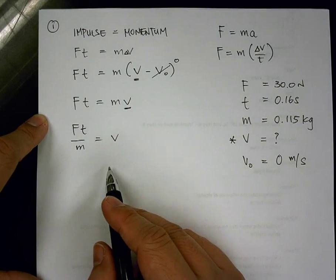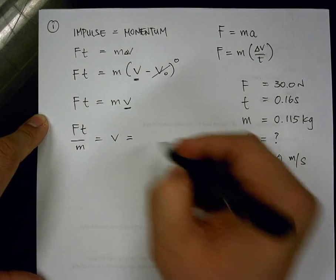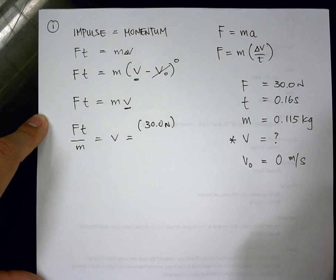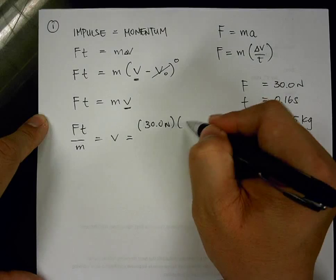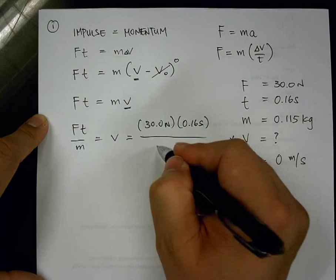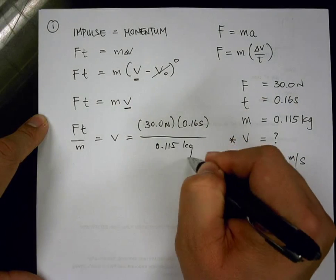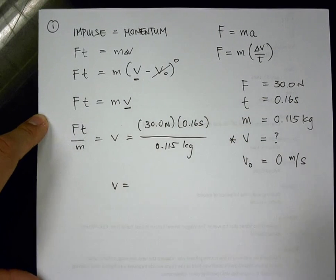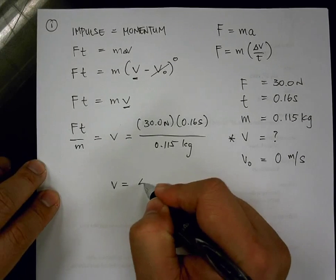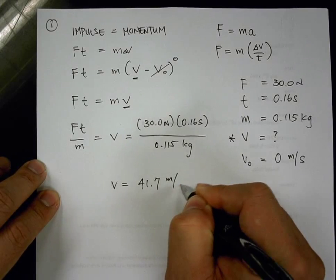So at this point, I'll go ahead and input the values. So F is force, and that's 30.0 newton. Time is 0.16 seconds. All divided by the mass, which is 0.115 kilogram. So my velocity, after you multiply and divide in your calculator, you can do them all in one step, because they're all following the same significant digit rules. The number that you should have is 41.7 meter per second.